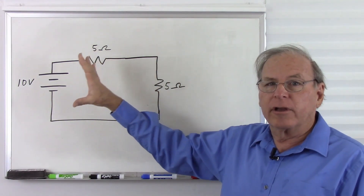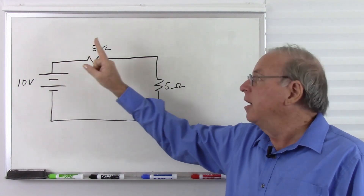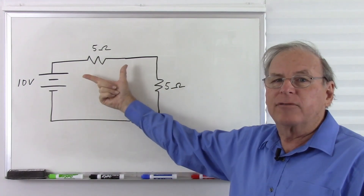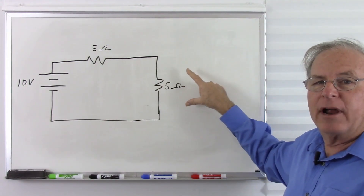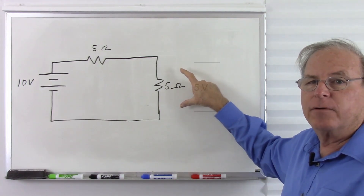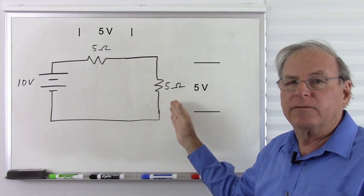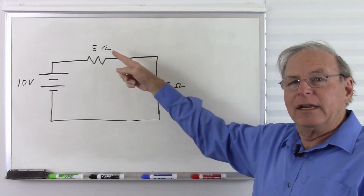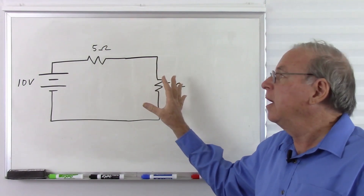Now we just have a regular series circuit that follows all the series circuit rules. We have a 10 volt battery, 5 ohms, and 5 ohms, which means that half of our voltage is across each resistor — so 5 volts here and 5 volts there, adding up to our total of 10 volts. Our total resistance is 10 ohms — we add the two resistors together.